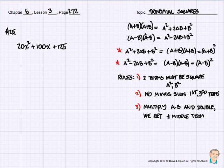Remember from back in Chapter 5, we had a plus b times a plus b, and we ended up with a squared plus 2ab plus b squared. And we had the same thing for its opposite: a minus b times a minus b gave us a squared minus 2ab plus b squared.